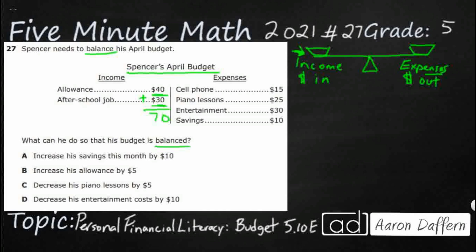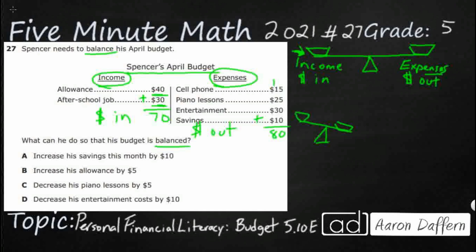You notice how he's got things on two different sides — that's a great way to make a budget, to separate them into income and expenses. So this is our money in. Let's see what our money out is looking like. Cell phone $15, piano lessons $25, entertainment $30, savings $10. Seems pretty good, but let's see what the problem is. Adding those up gives us $80. So there's the imbalanced budget: his $70 income versus $80 in expenses, and his expenses is definitely greater than his income.